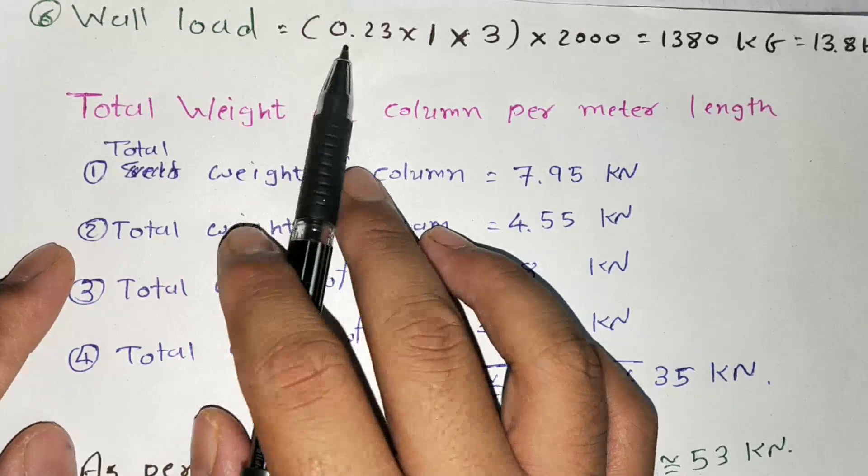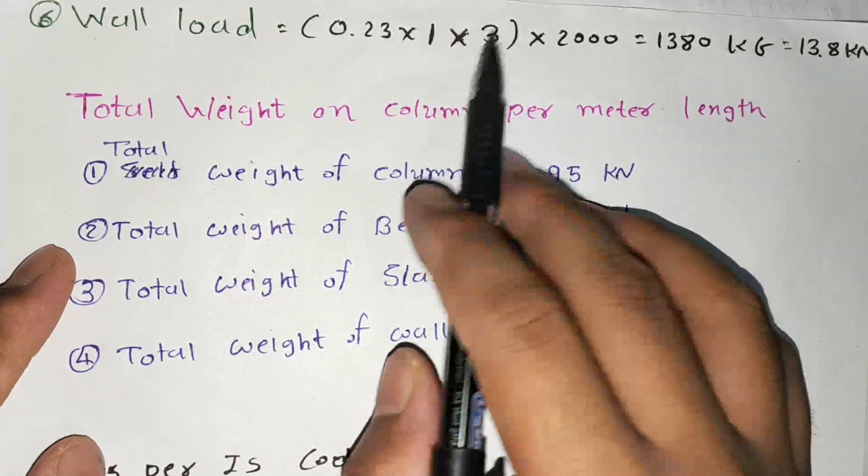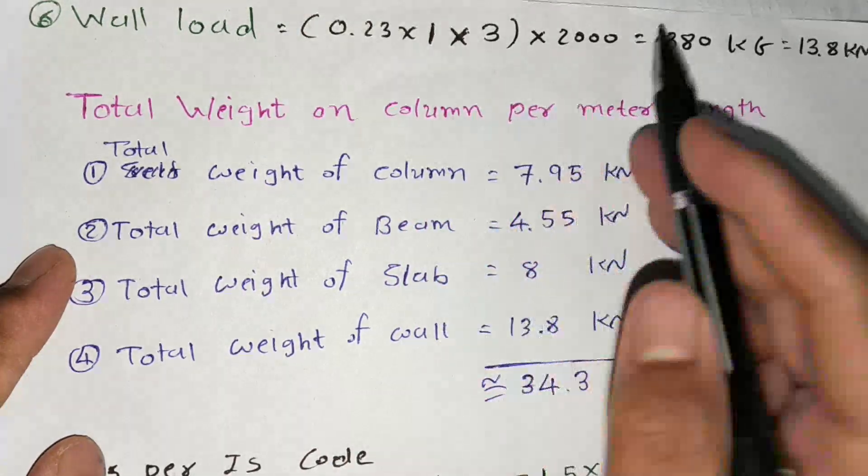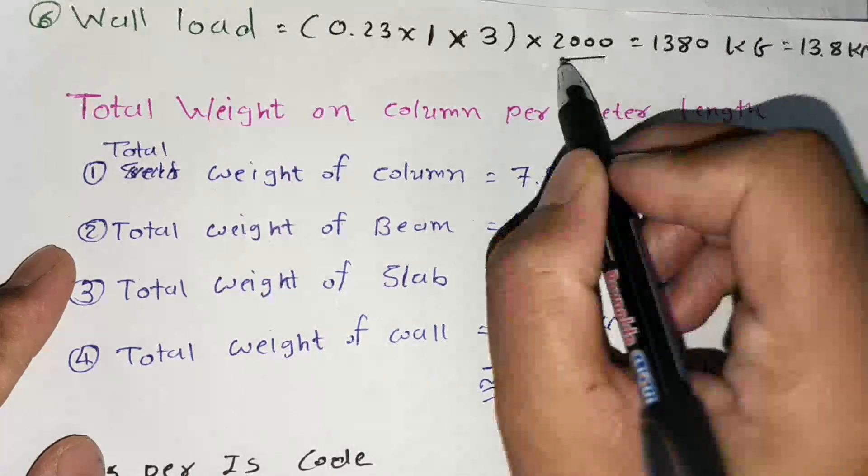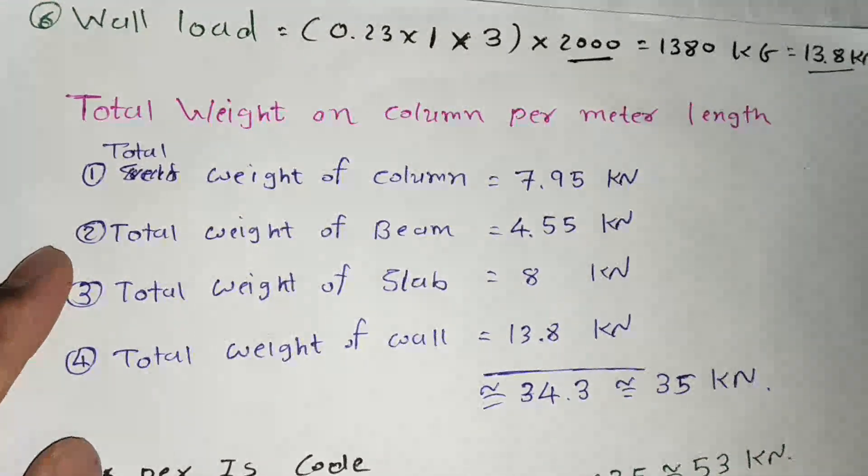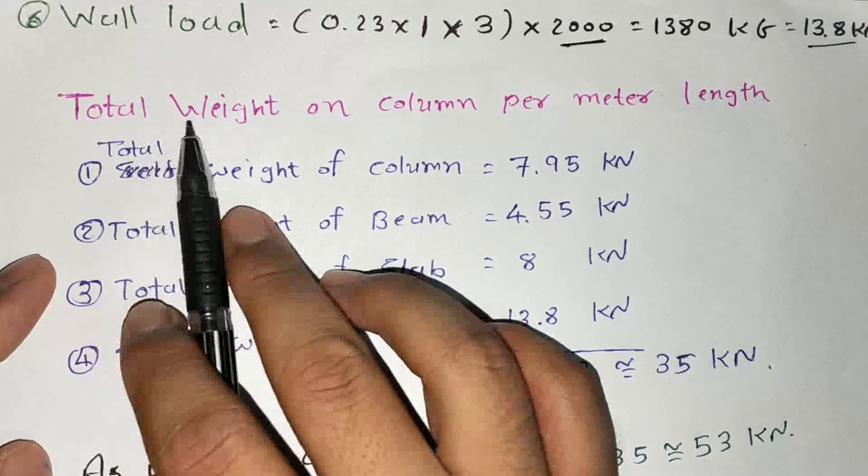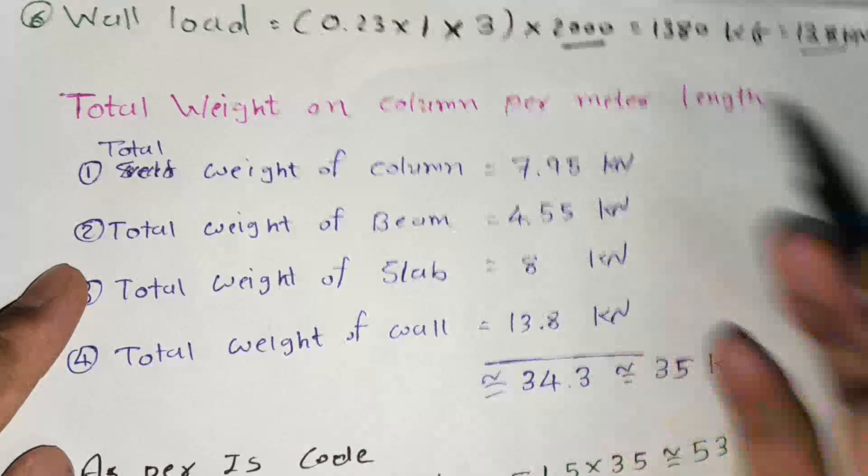Here wall thickness is 0.23 and 1 is unit length and 3 is height of wall and 2000 is density of wall. So I got 1380 kg, almost 13.8 kN. So here I will summation of this whole total weight on column per meter length.